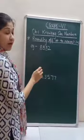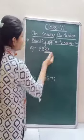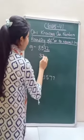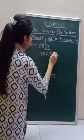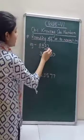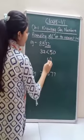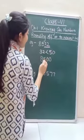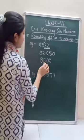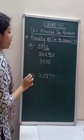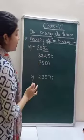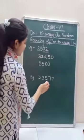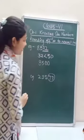Now we have to round off the number to its nearest hundred. For nearest hundred, you have to see the last two digits. If the last two digits form a number less than 50, then we put zeros in the place of ones and tens, and the rest of the number remains the same. So 8500 is the round off of 8500 to its nearest hundred.